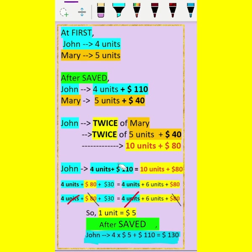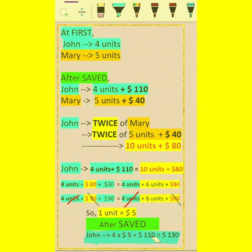Now, after saving, John has 4 units plus $110. So 4 times 1 unit ($5) plus $110 equals $20 plus $110, which is $130.